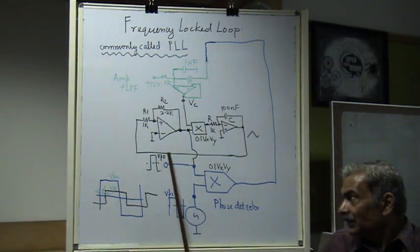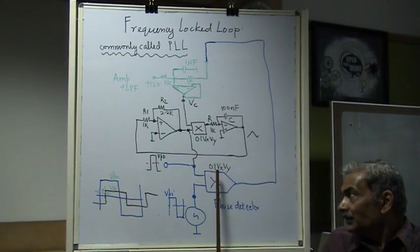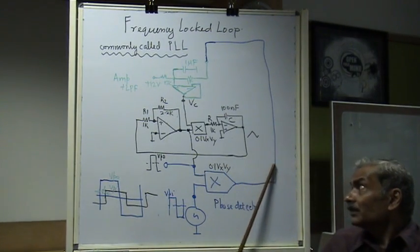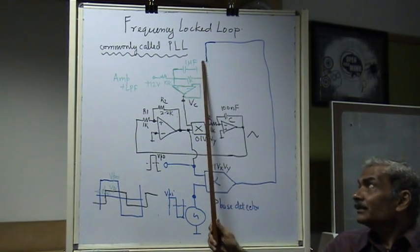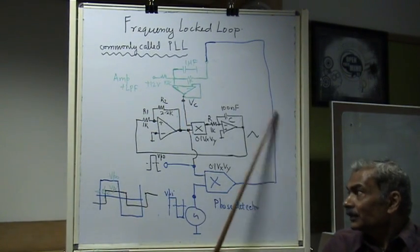So, these are amplitudes VPO and VPI square. This is 0.1 Vx into V by A. It detects the phase and the average of this appears here. So, this forms the loop.